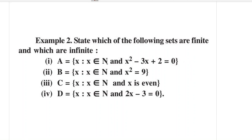First: x such that x belongs to natural numbers and x² − 3x + 2 = 0. This is set builder form. Solving the quadratic equation, we get x = 2 and x = 1 — two values. Therefore this is a finite set.